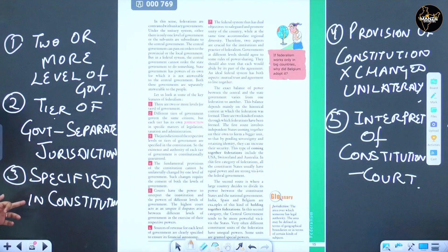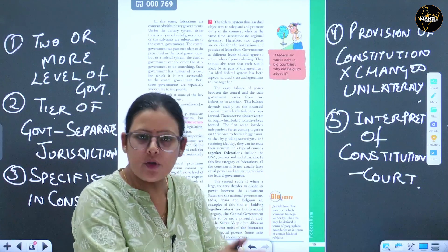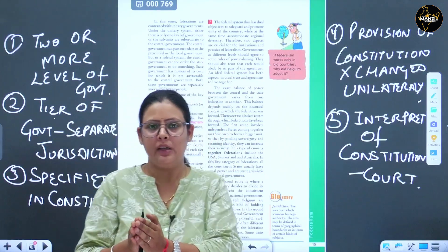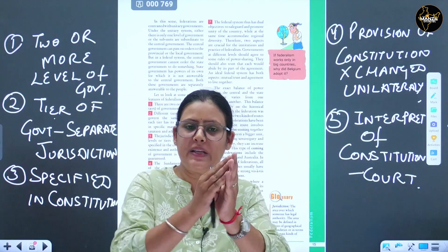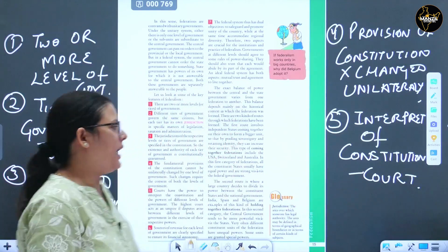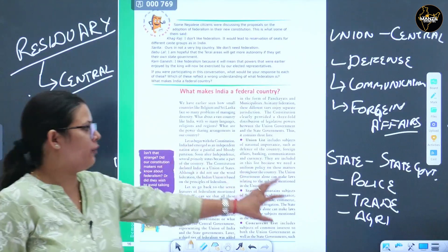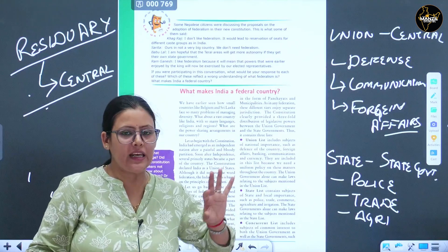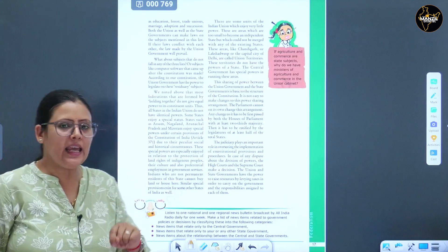The first feature of federalism - two or more levels of government - is satisfied: there is a central government, state government, and the third level is local self-government. Second, whatever power they have is specified in the constitution - the 7th Schedule Union List, State List, and Concurrent List specifically mention different areas where each level can make rules. In these two ways, India comes under the federation.